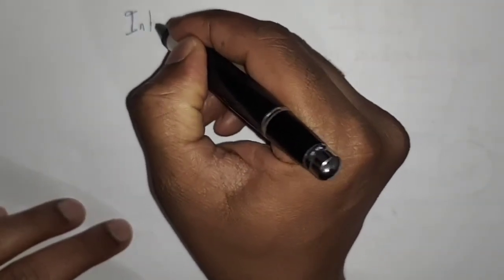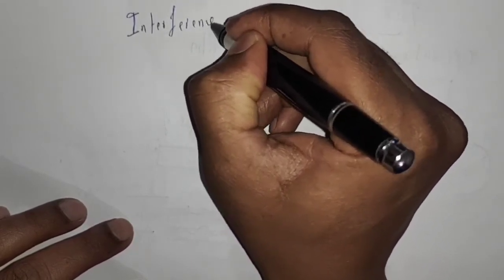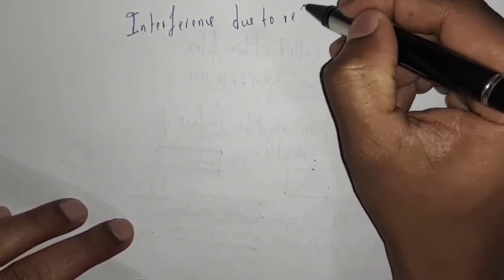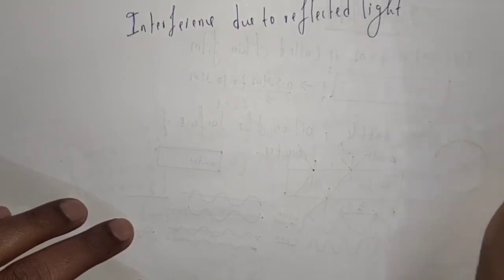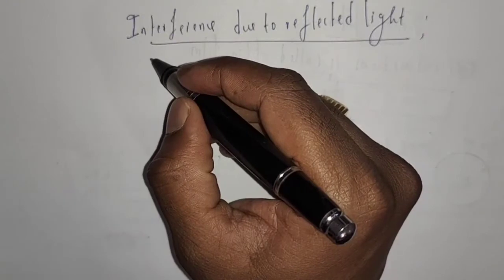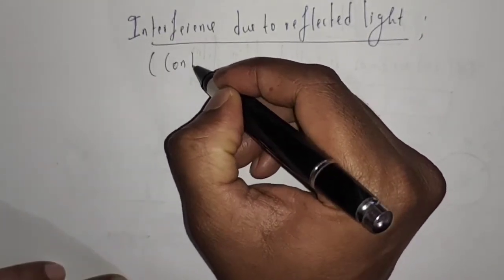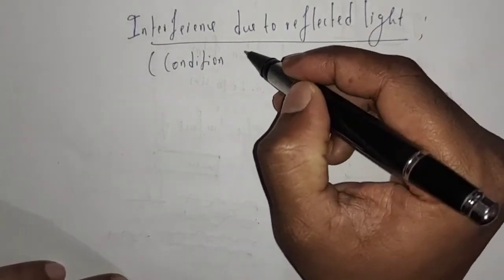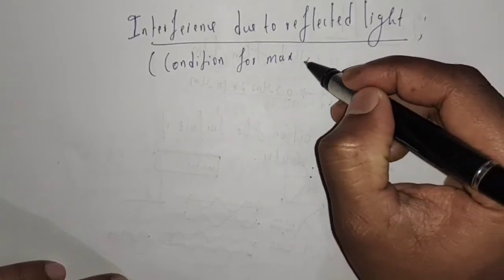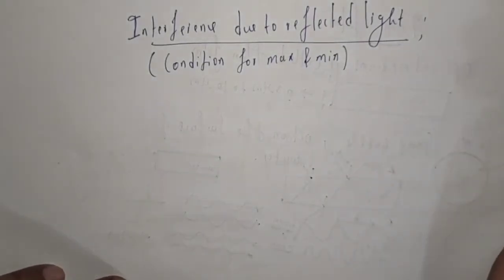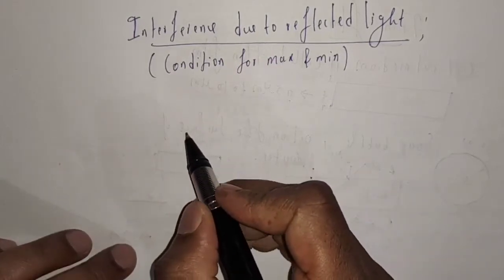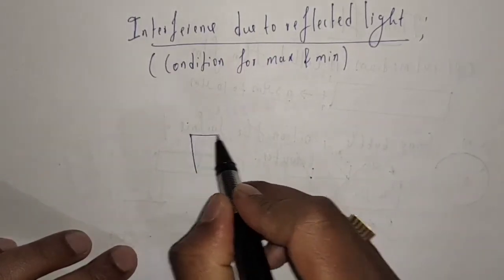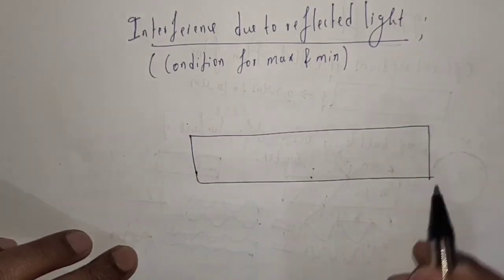In this video I am going to discuss about interference due to reflected light, and we are going to derive condition for maxima and minima. To derive the condition for maxima and minima, let us consider a thin film.